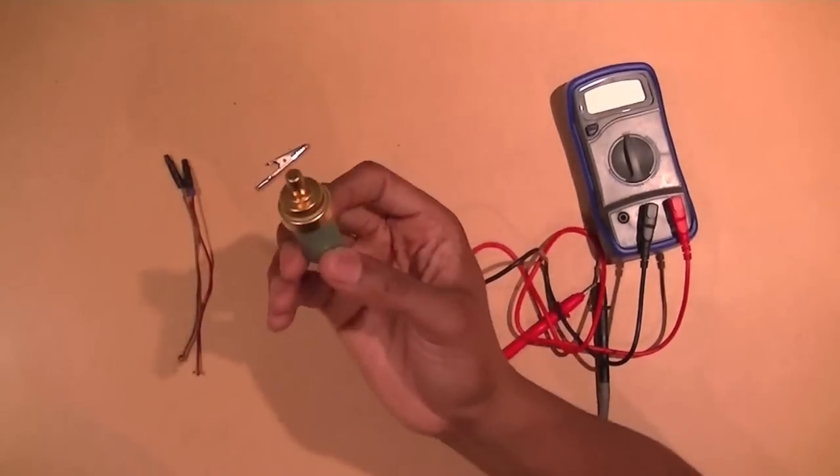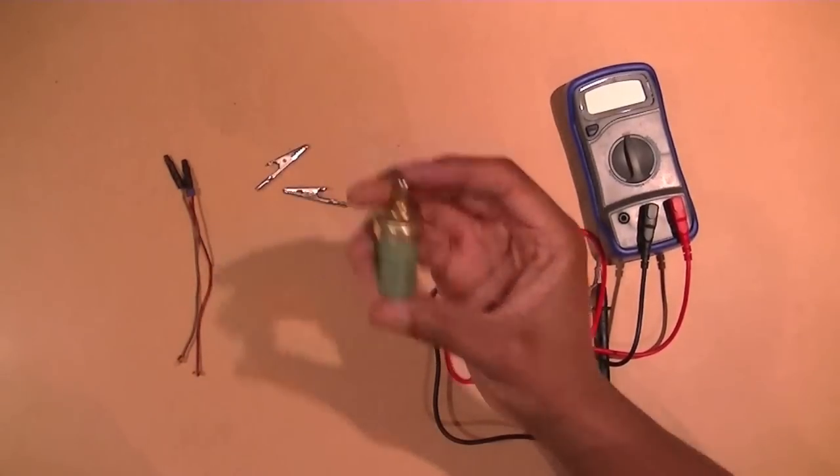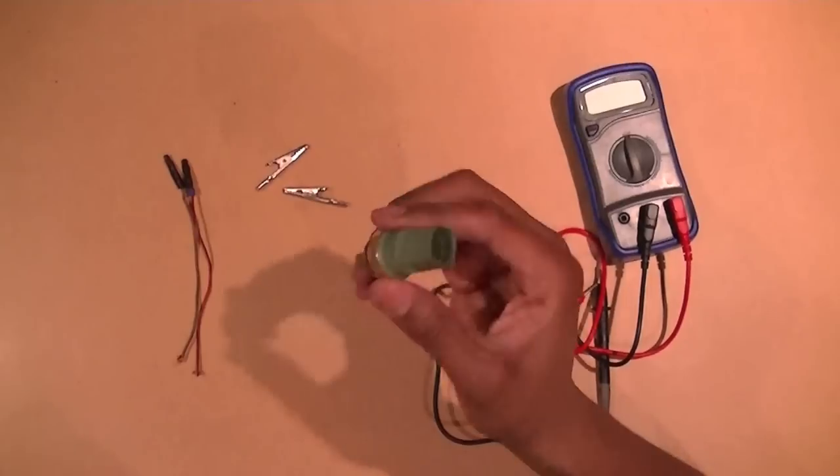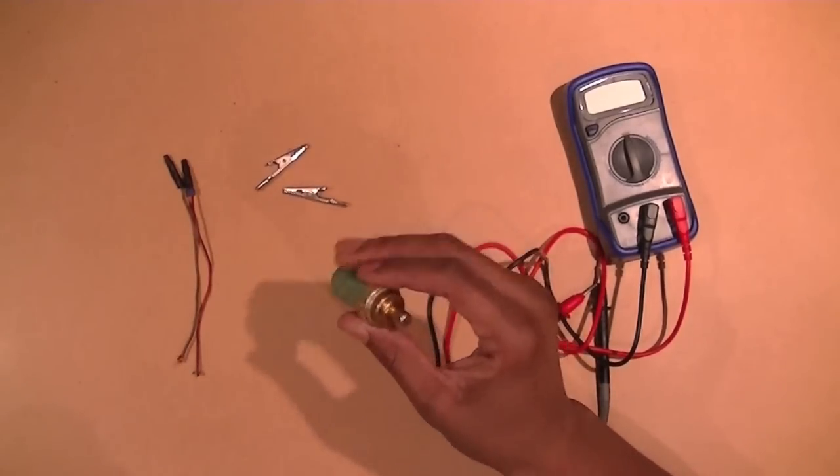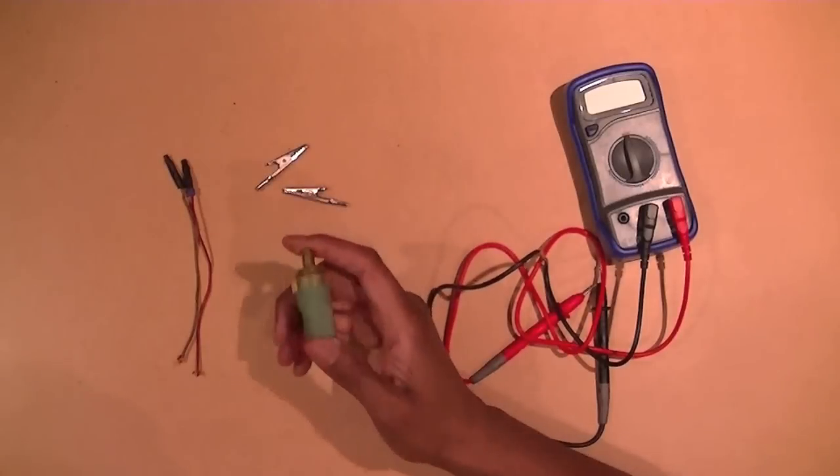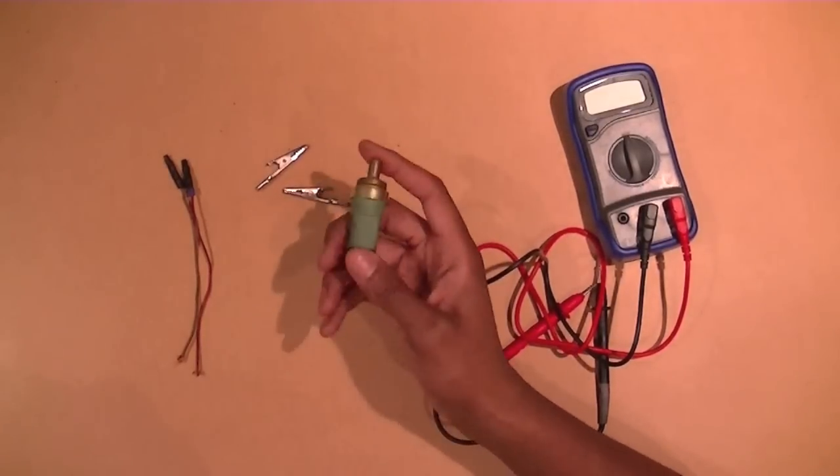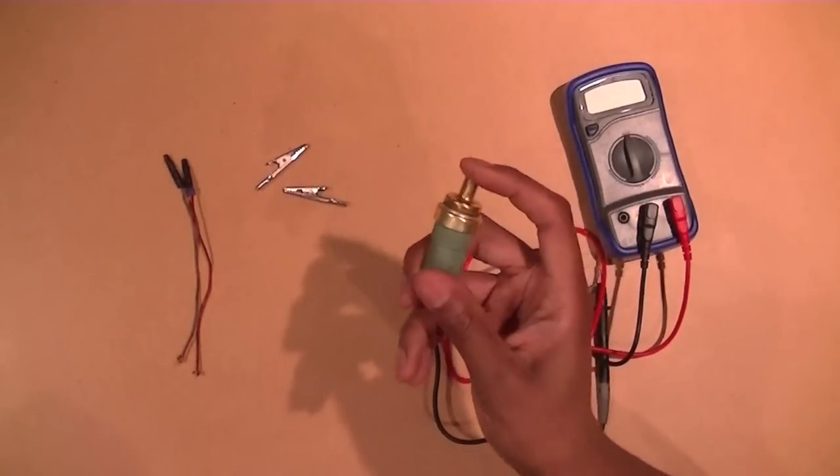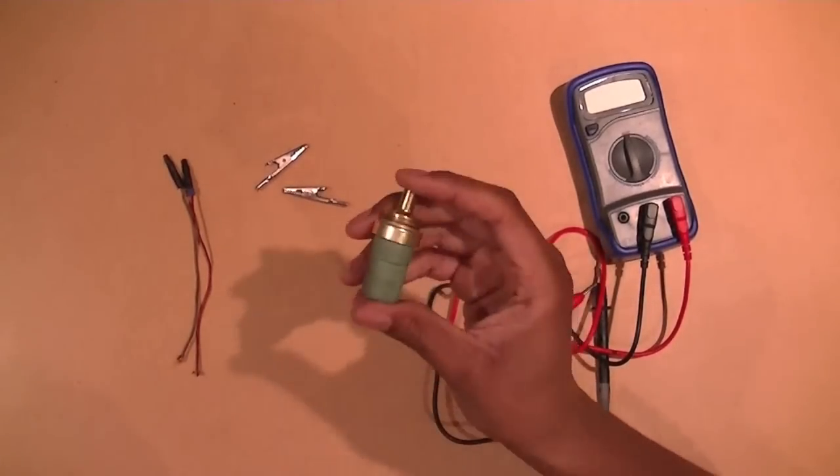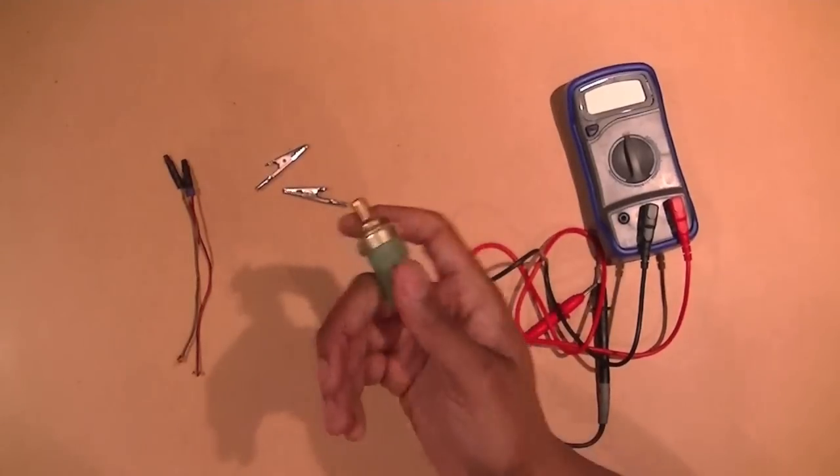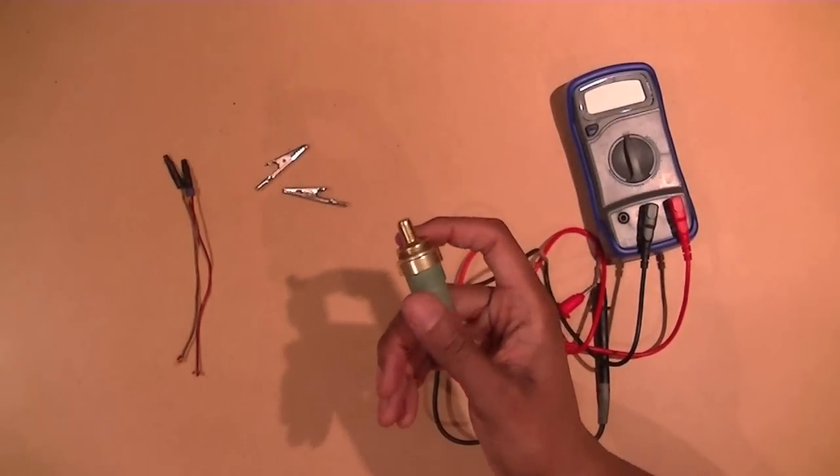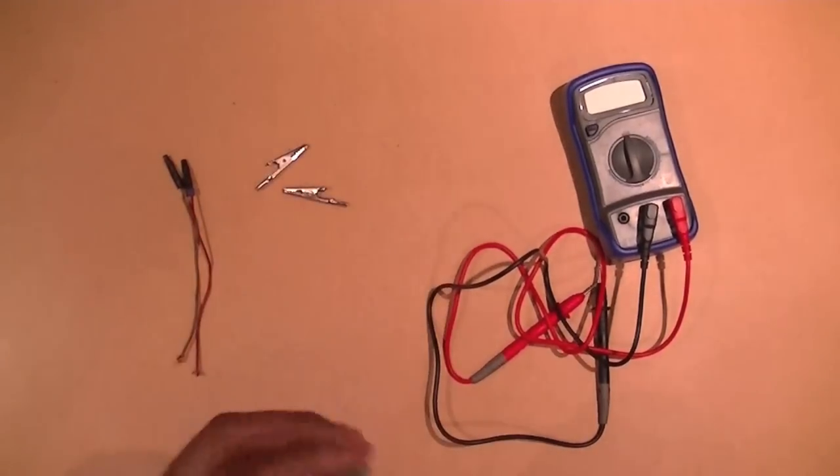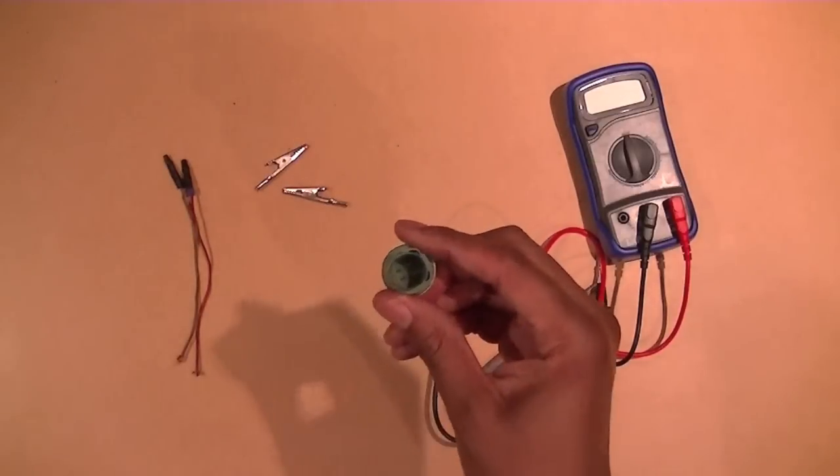Basically what we're going to be checking on this particular thermostat or coolant sensor is the resistance coming from this. The specification is when it's cold it should be between 1,500 and 2,500 ohms. And when it's warm it should be between 375 and 275 ohms. That's just technical stuff, but basically I'm trying to tell you what we're looking for.